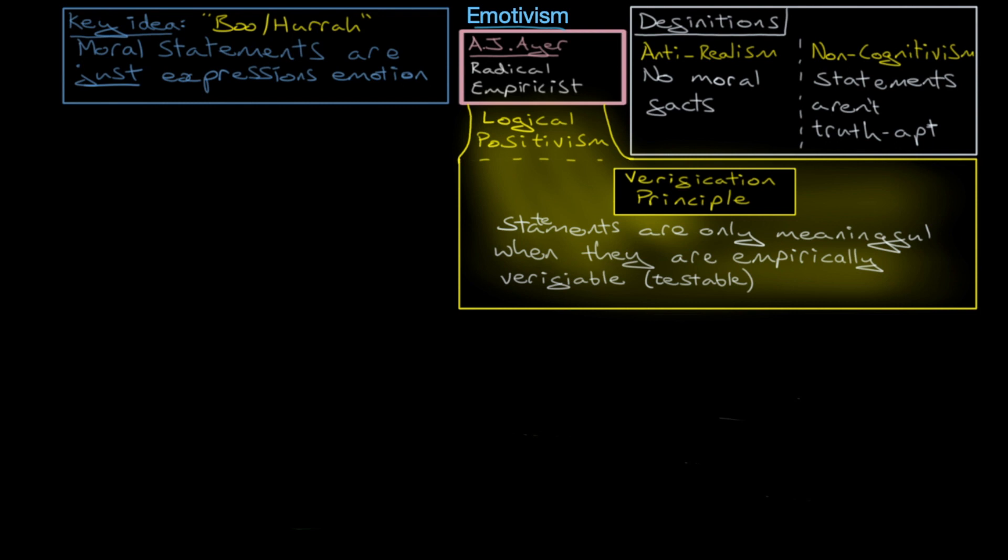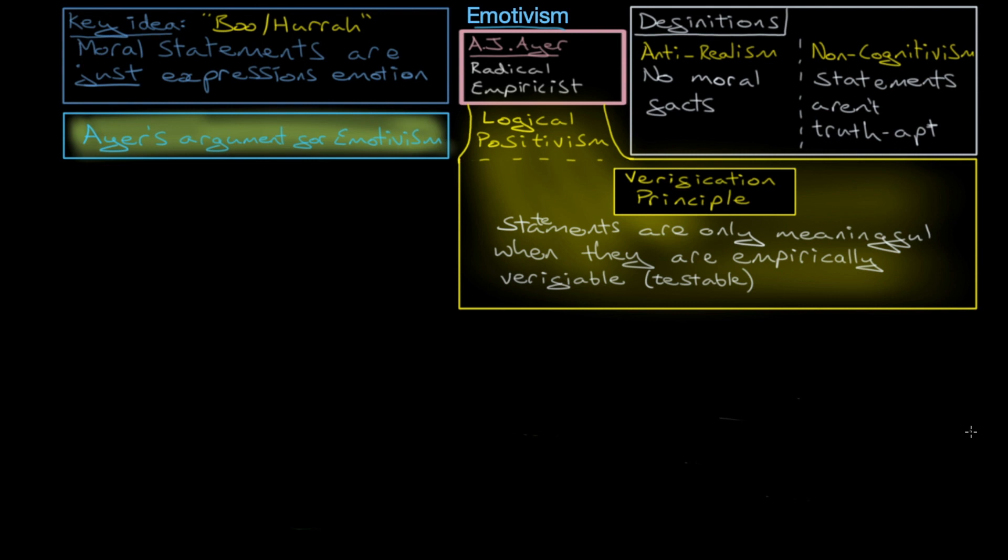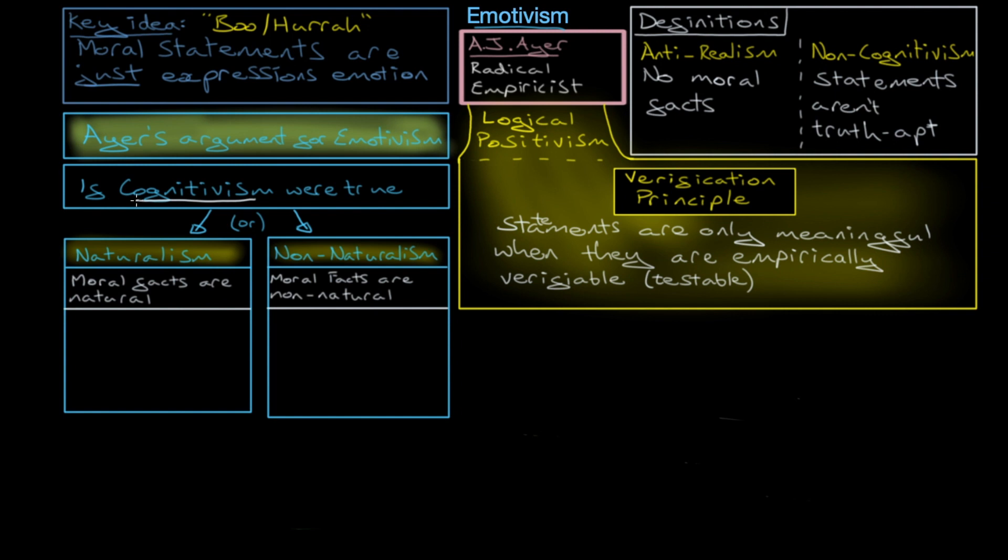Let's now turn to Ayer's argument for emotivism. So, Ayer argues that let's start not with non-cognitivism, but with cognitivism. The idea that moral statements are truth-apt. That they are either true or false. Now, he says, look, if cognitivism were true, either you would have a naturalist understanding or a non-naturalist understanding.